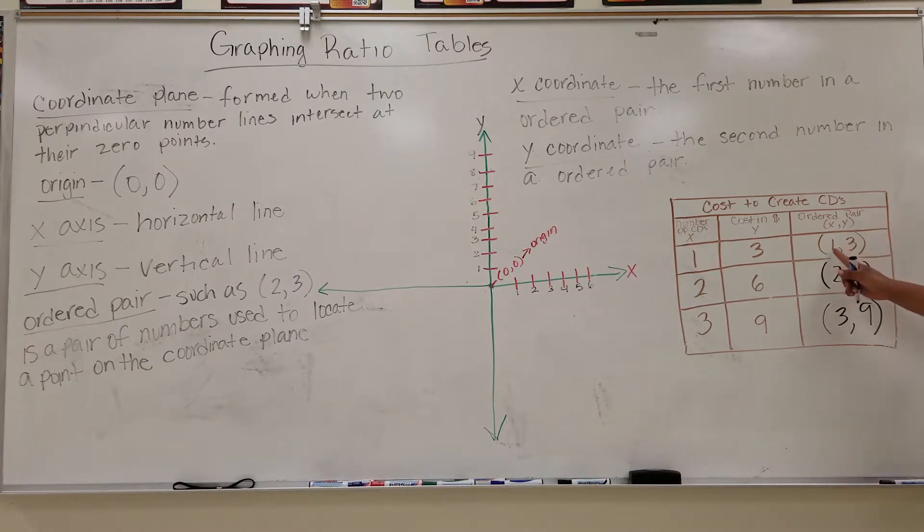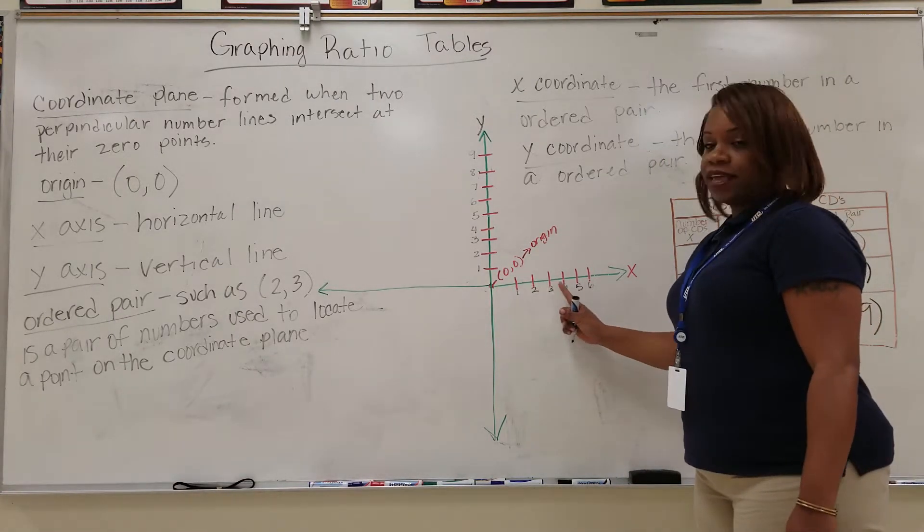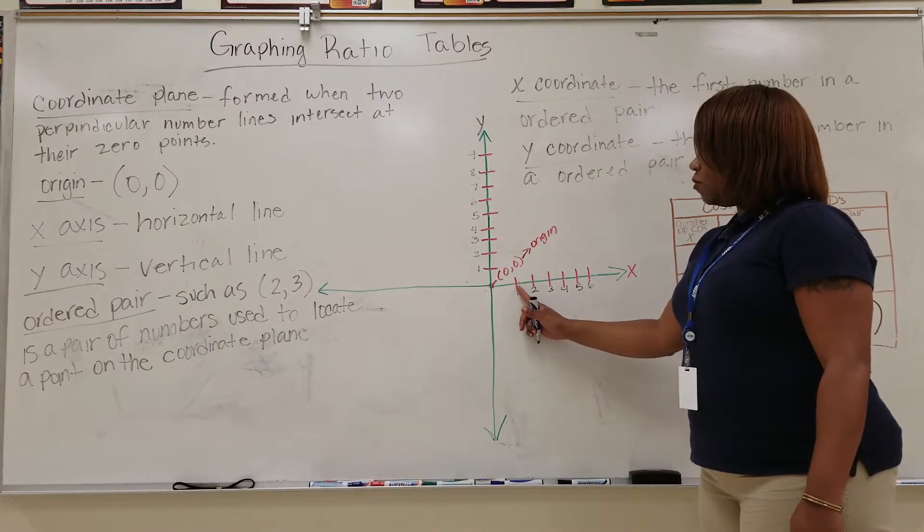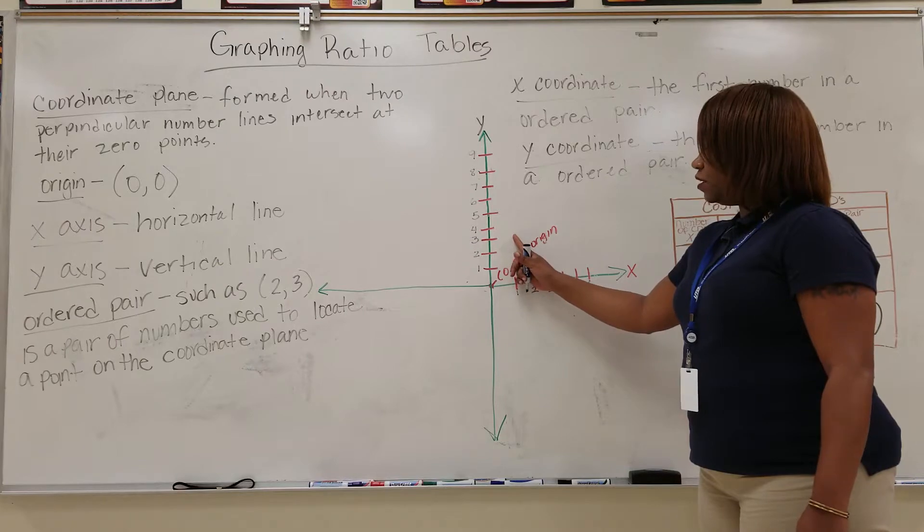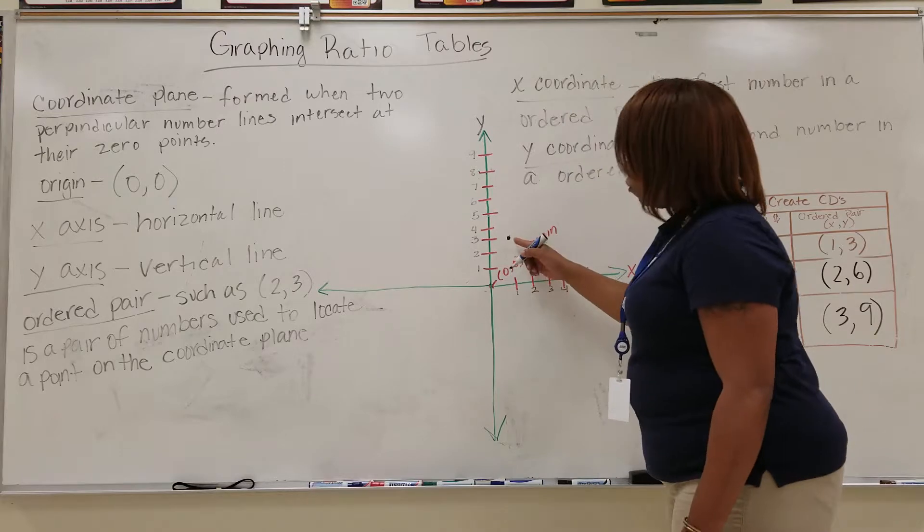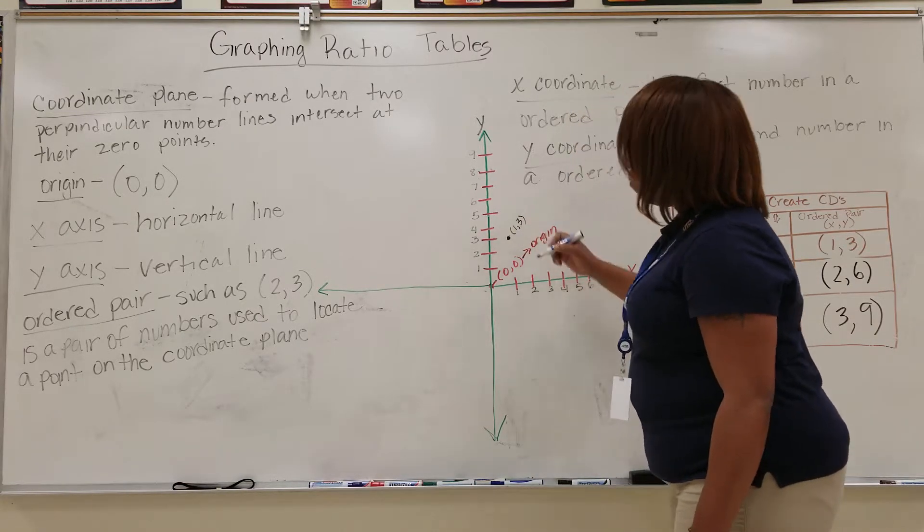We'll look at the x-coordinate first, which is one, and then the y-coordinate. So we'll be graphing (1, 3). Over here, we go on the x-axis, we find one, and then we go up three spaces or units. And we draw a dot and we can label it (1, 3).